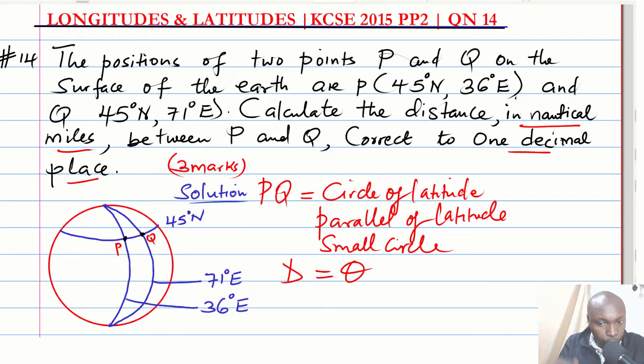Longitude difference, which I'll denote by theta, multiplied by 60, multiplied by the cosine of the latitude angle. That is the latitude where these two points lie.